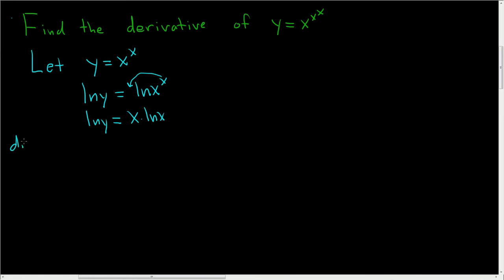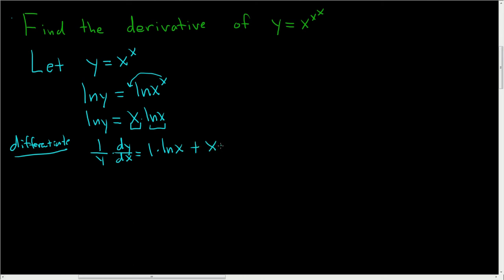Now you differentiate both sides of this equation. The derivative of the natural log of y with respect to x is 1 over y times dy/dx — that's the chain rule. Here we use the product rule. So the derivative of the first is 1 times the second, which is the natural log of x, plus the first, which is x, times the derivative of the second. To finish, multiply everything by y, so dy/dx is y times the natural log of x, plus 1.